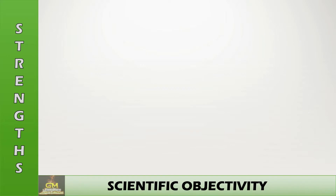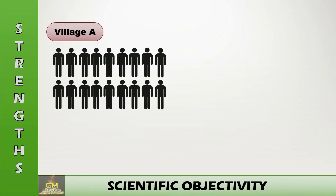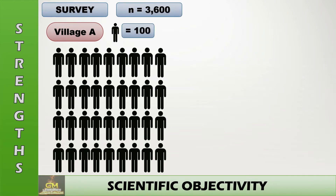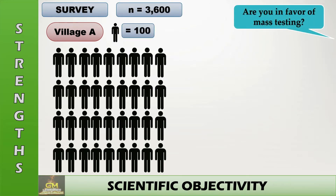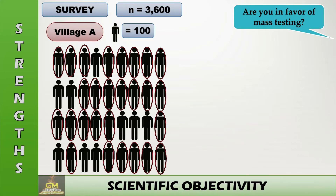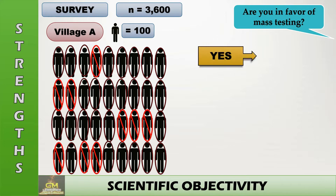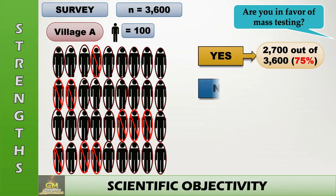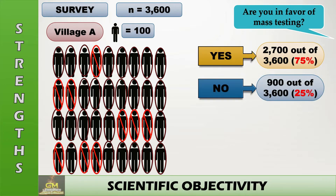Let's consider this example. In Village A, a researcher decided to conduct a survey of 3,600 individuals, and the question is: are you in favor of mass testing? The researcher gives out questionnaires to participants and tallies all the responses. Based on their answers, those who answered yes are 2,700 or 75% of the total population, while those who answered no are 900 or 25% of the total population.